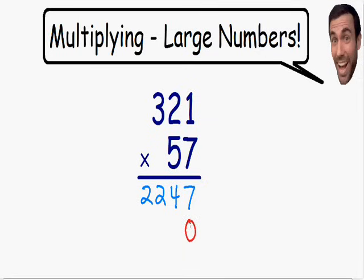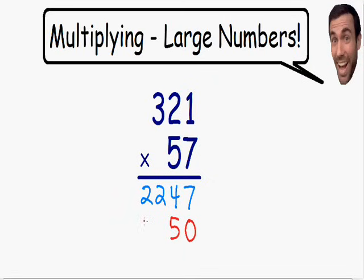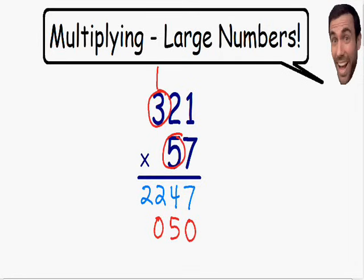Now we are ready to start multiplying. First we have to multiply this 5 with the 1. 5 times 1 is equal to 5, and there is only one digit so there is no need to carry over. Now we can multiply this 5 with the 2. 5 times 2 is equal to 10. This time there are two digits and there is only enough space for one. So we need to take the digit on the left, this number 1, and carry it over to the next number on the left.